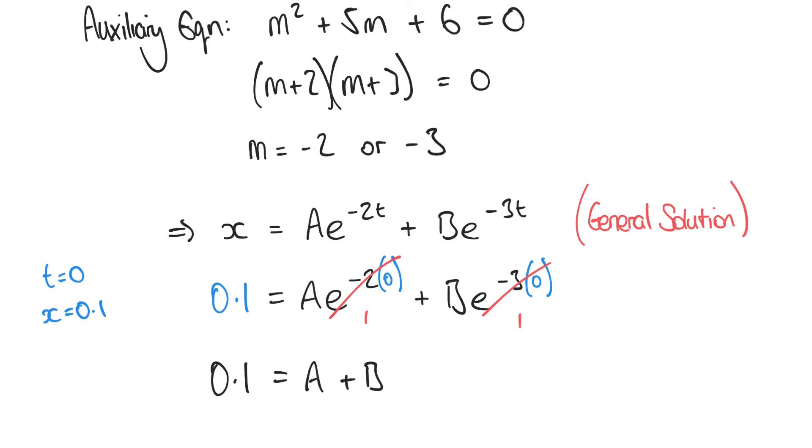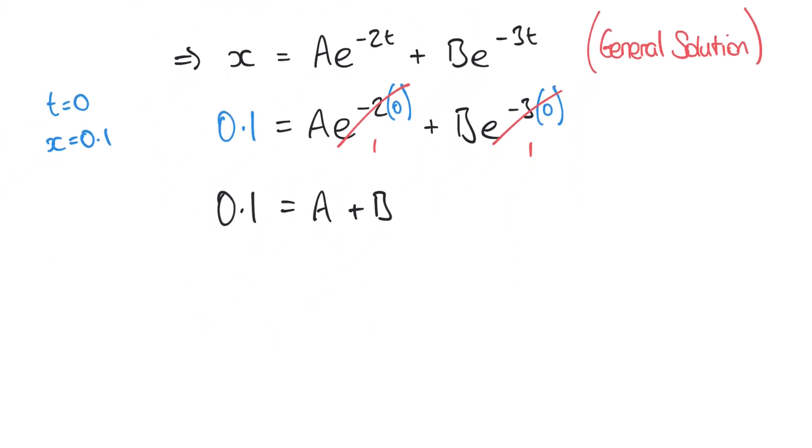In order to do that, we're going to have to differentiate our general solution as well, just like in our previous examples. So we had our general solution in the form x = Ae^(-2t) + Be^(-3t), and differentiating that we now have dx/dt = -2Ae^(-2t) - 3Be^(-3t).